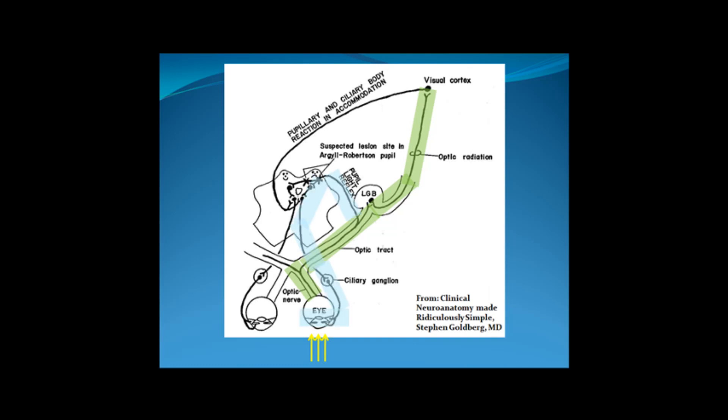Pupillary constriction to the light occurs when, before reaching the lateral geniculate body, the optic tract splits sending fibers back into the brainstem where efferent fibers of the third cranial nerve return to the ipsilateral eye causing the pupil to constrict. The consensual light reflex occurs when fibers in the brainstem cross over and stimulate the contralateral third cranial nerve, causing the opposite pupil to also constrict.